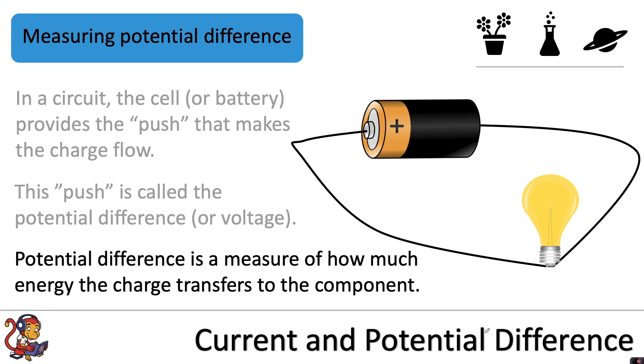Potential difference is a measure of how much energy the charge transfers to the component. For example this light here. Potential difference is a measure of how much energy is transferred by the charge to this component.